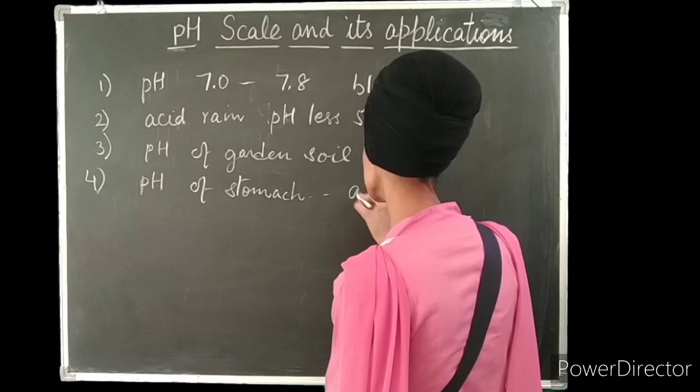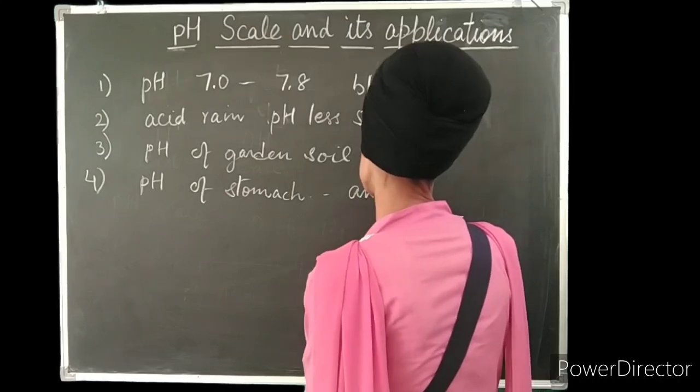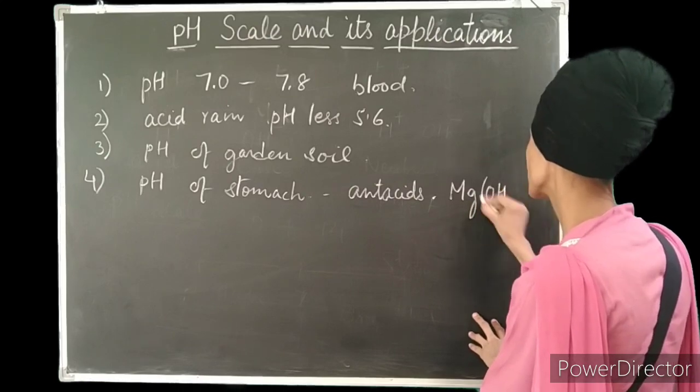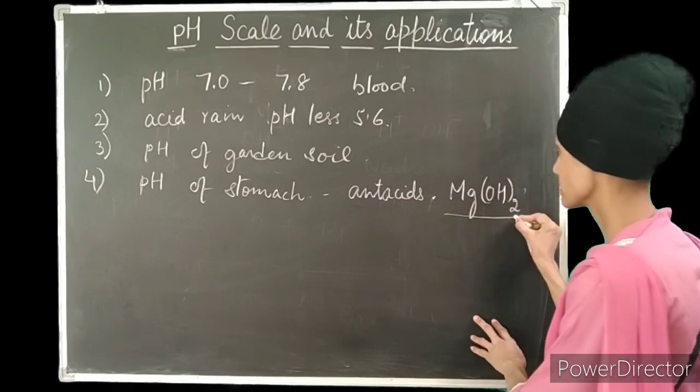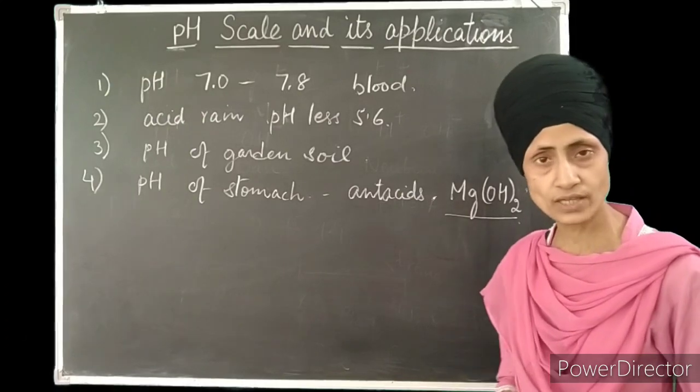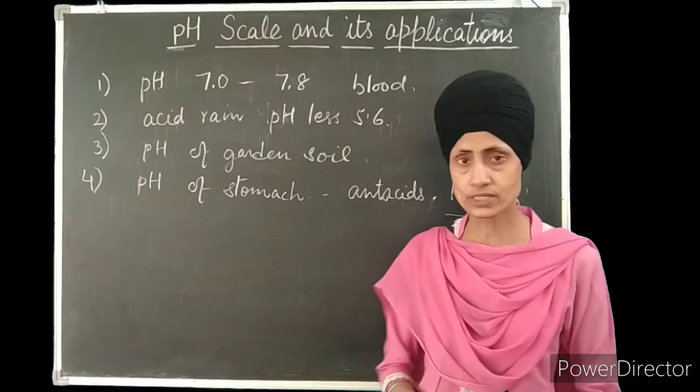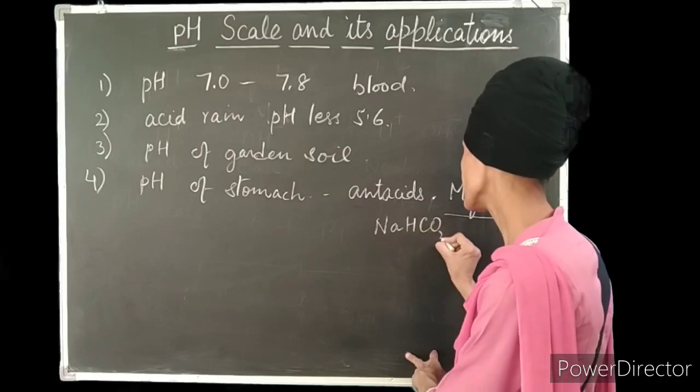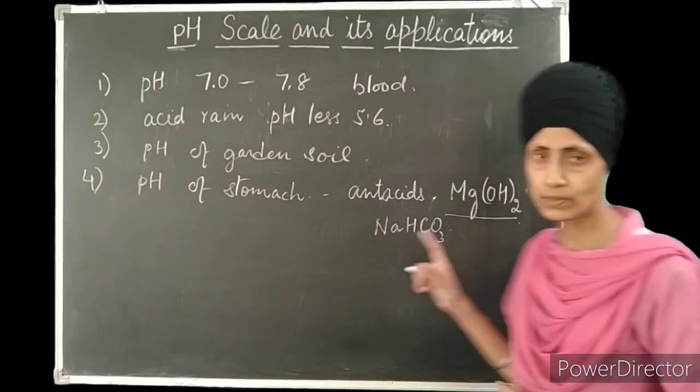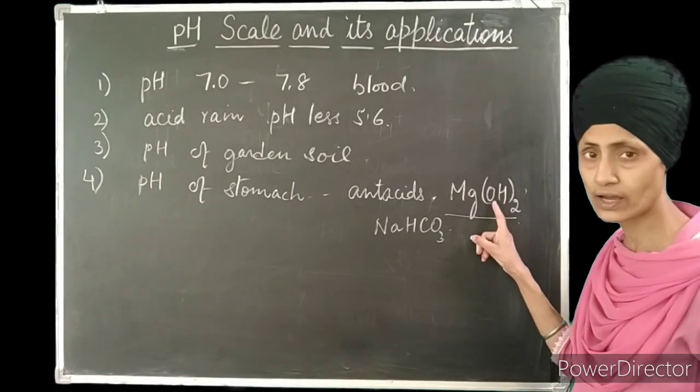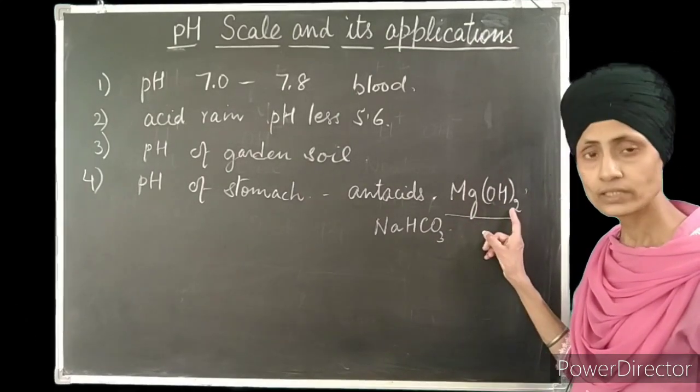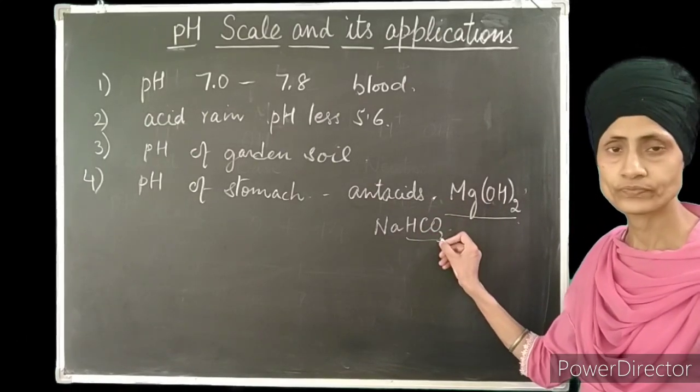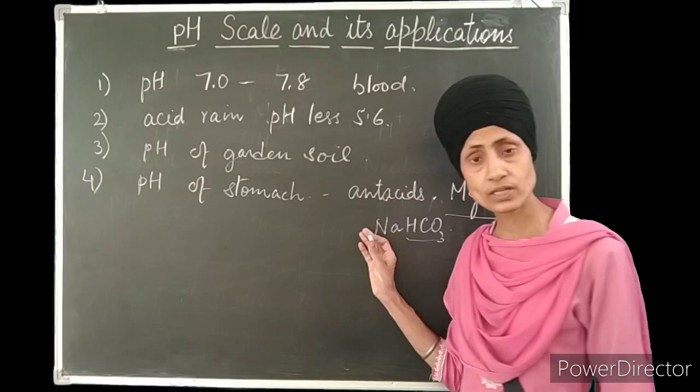Antacids are the medicines which are mild bases containing magnesium hydroxide, which is also called milk of magnesia. No doubt, metal hydrogen carbonates like sodium hydrogen carbonate which are present in medicines like Eno are also used, but metal hydroxides like magnesium hydroxide are better antacids as compared to hydrogen carbonates. So this is the use of pH in our stomach.